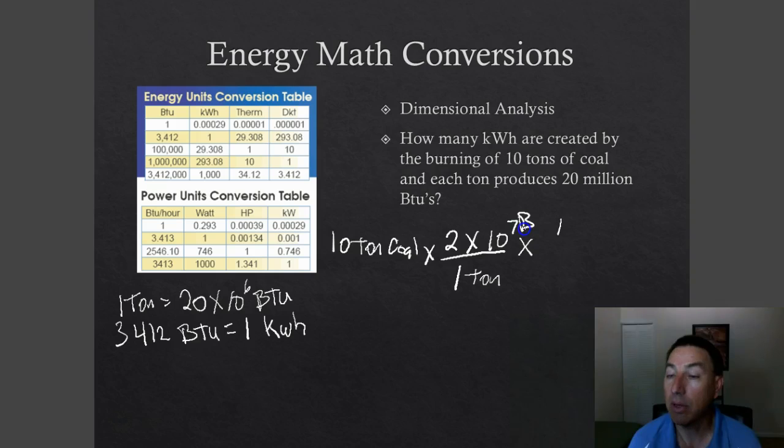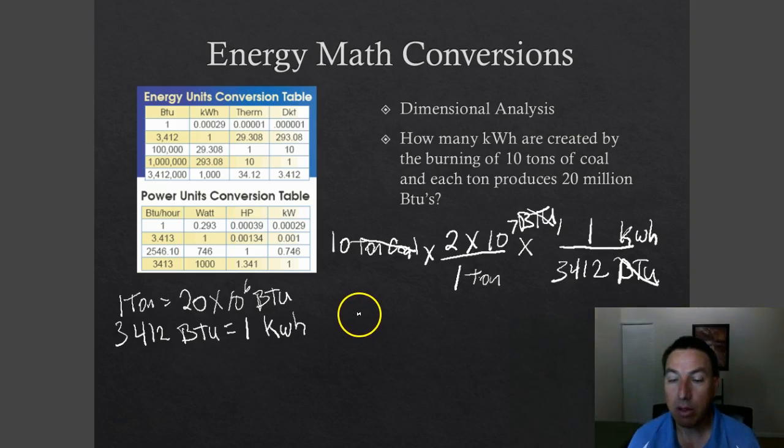Then we're going to multiply that times our BTUs. We know that each ton produces 20 million BTUs. This is what happens when you don't use your units. You make mistakes like that. So we've got our BTUs. Then we need to transfer over to kilowatt hours. We know that there are 3,412 BTUs per one kilowatt hour. If we look at our actual units here, they cancel out. So tons and tons, BTUs and BTUs. We end up with our kilowatt hours, which is what we really want. If you do all the math here, it's a little over 58,617 kilowatt hours.